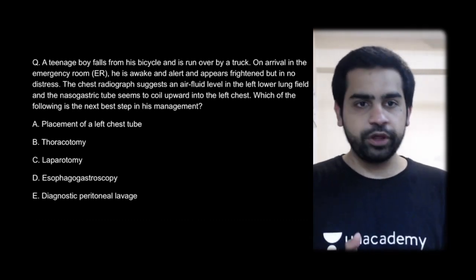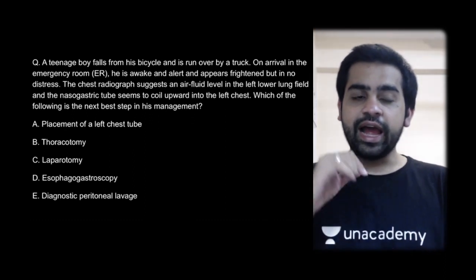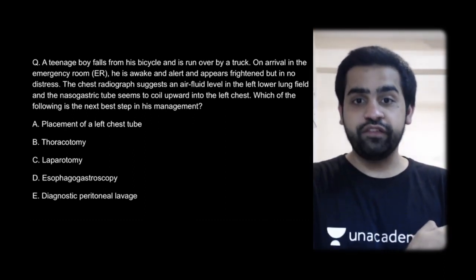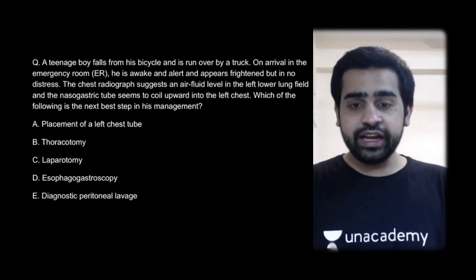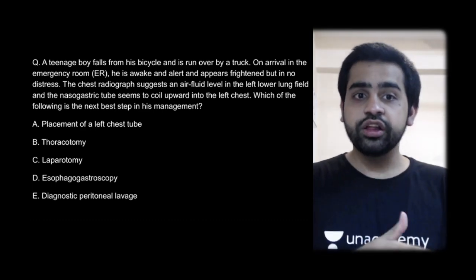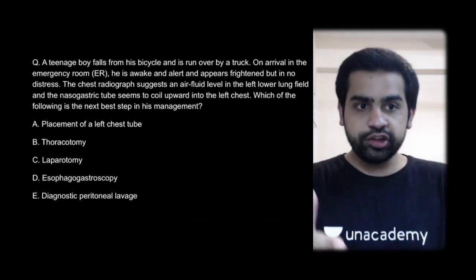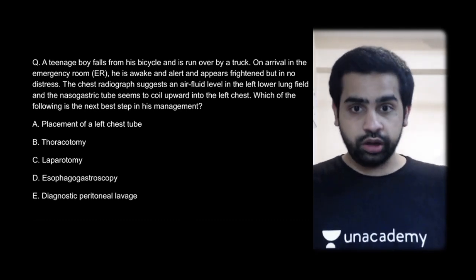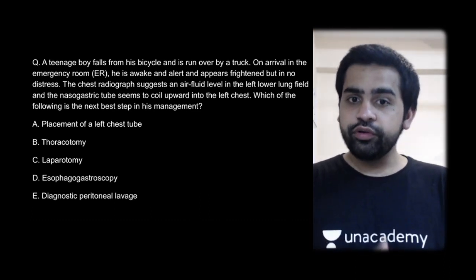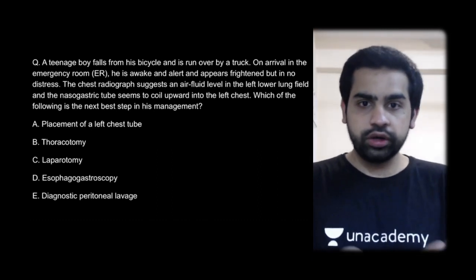Understand the clinical scenario: the patient is stable. On chest X-ray, there was an air-fluid level, and the nasogastric tube coiled in the left chest — this should not happen. The nasogastric tube should enter the stomach and sit below the diaphragm. Because the tube is coiling in the left chest, the diagnosis is diaphragmatic rupture leading to herniation of visceral organs — the stomach — into the thoracic cavity. That is why there is an air-fluid level in the left chest, and that is why the next step is laparotomy.